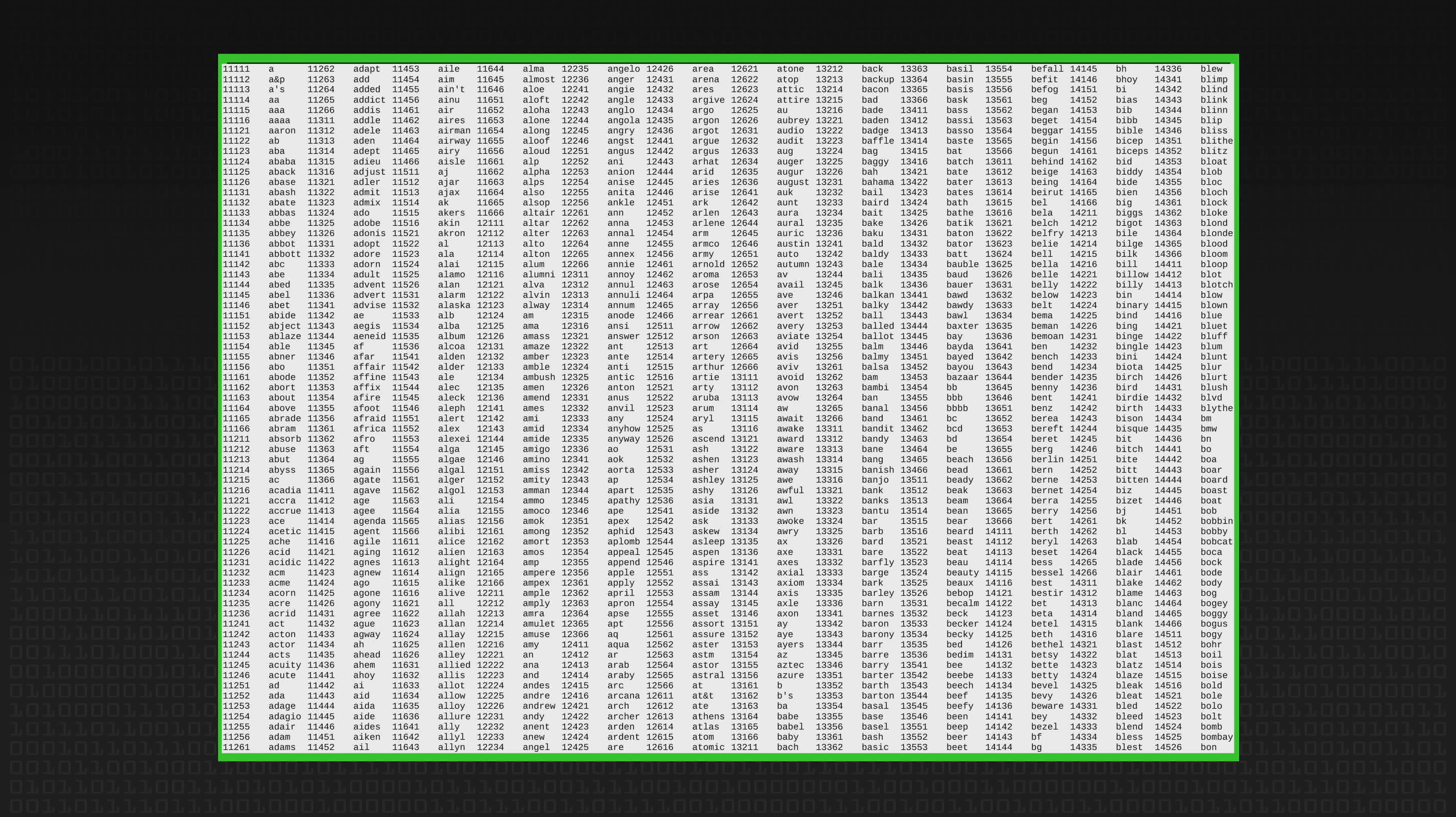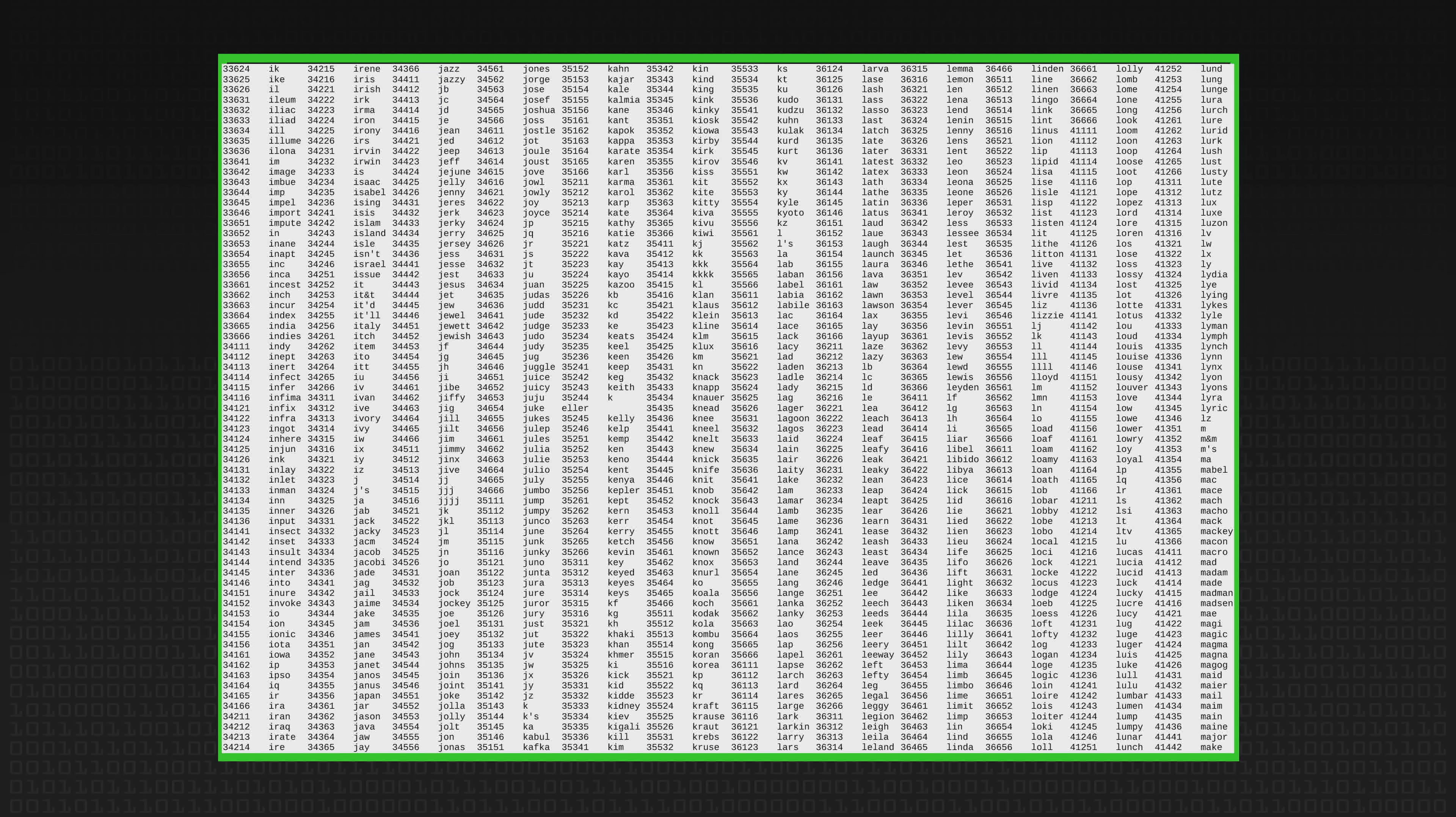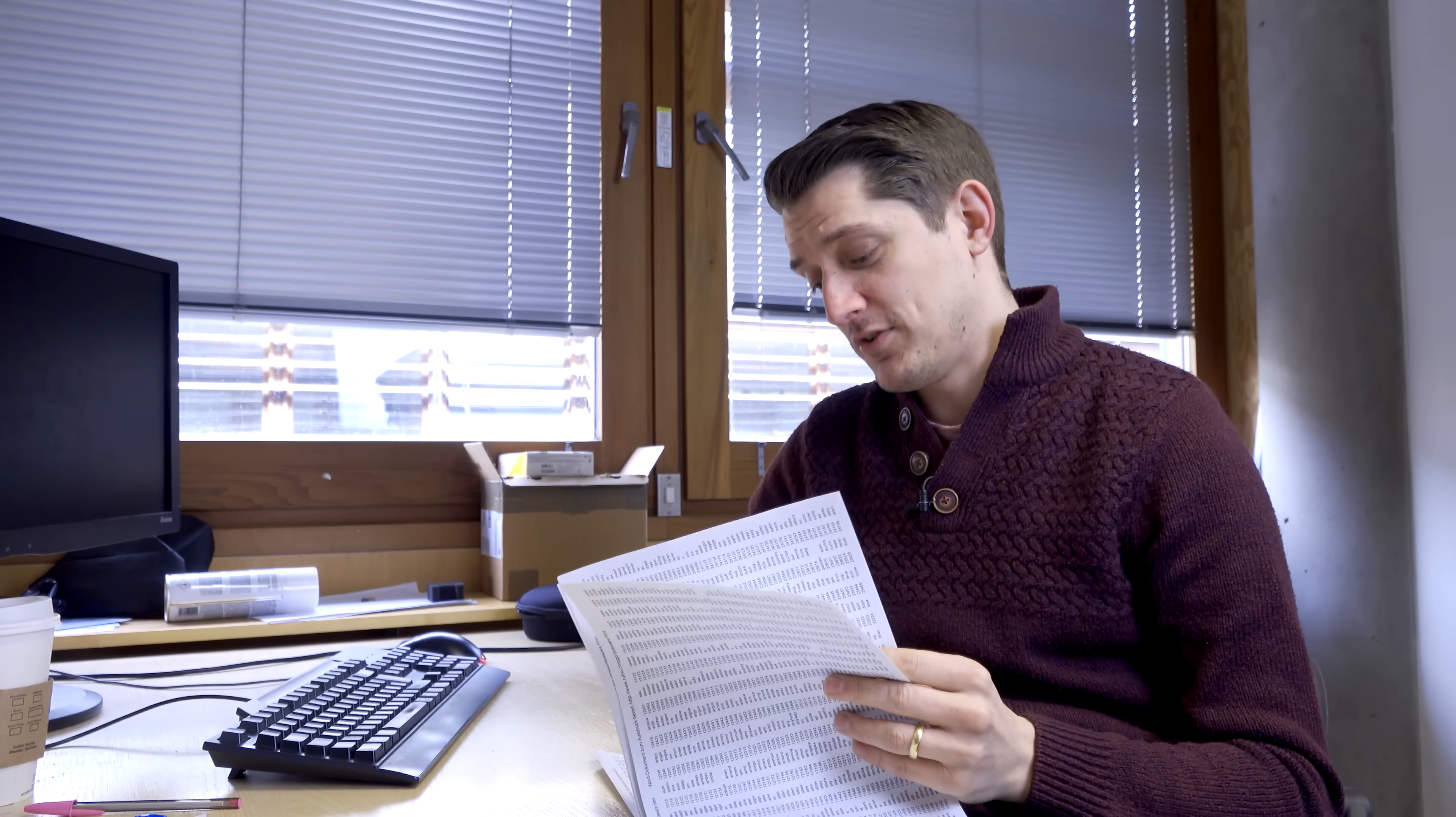So this is the Diceware list. It's a kind of compromise between the number of dice you have to roll incessantly to come up with passwords and being fairly quick. There are 7,776 words on this, which is all the different combinations of five dice rolls. So that's why I've got my nice unbiased dice.